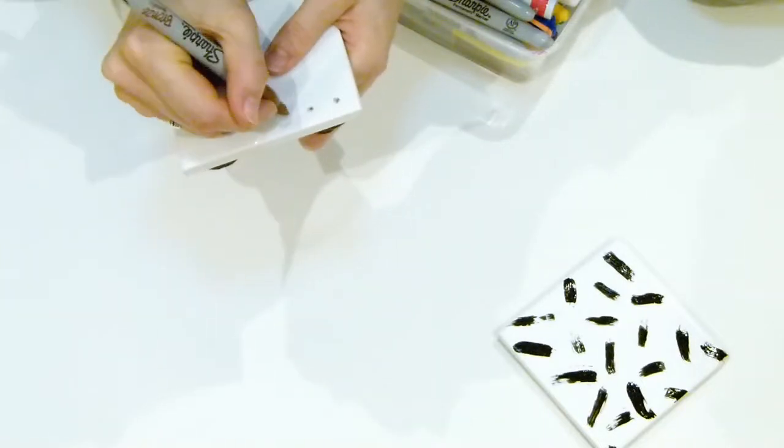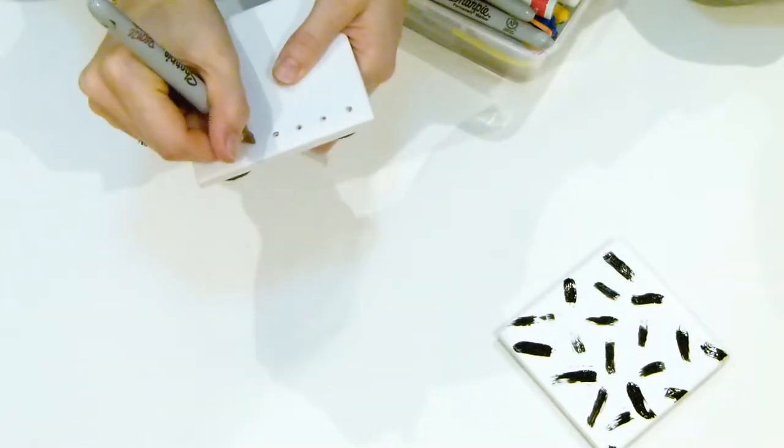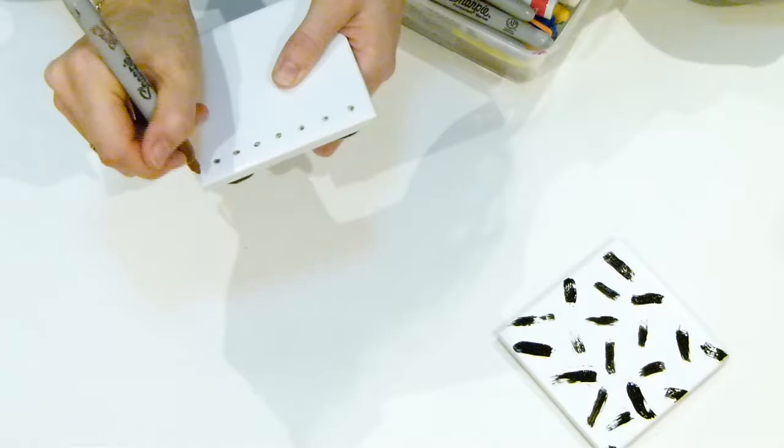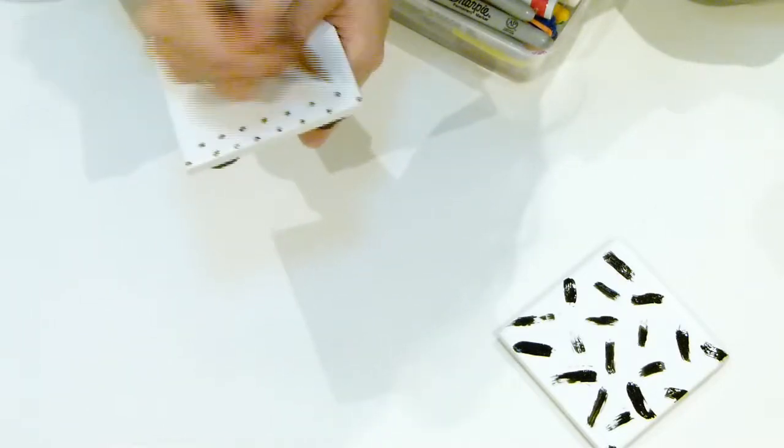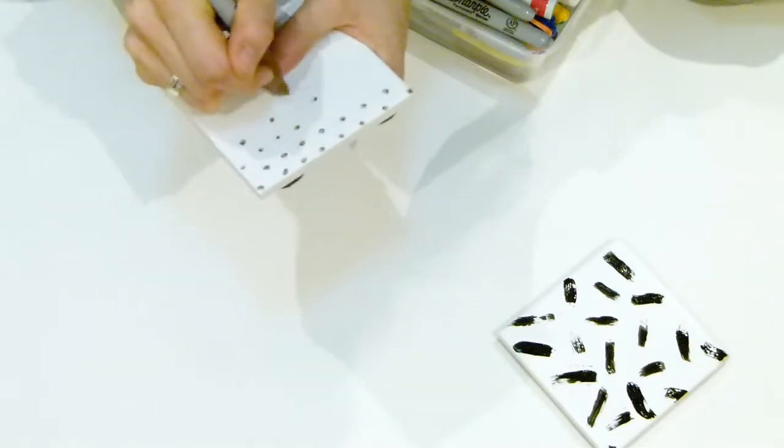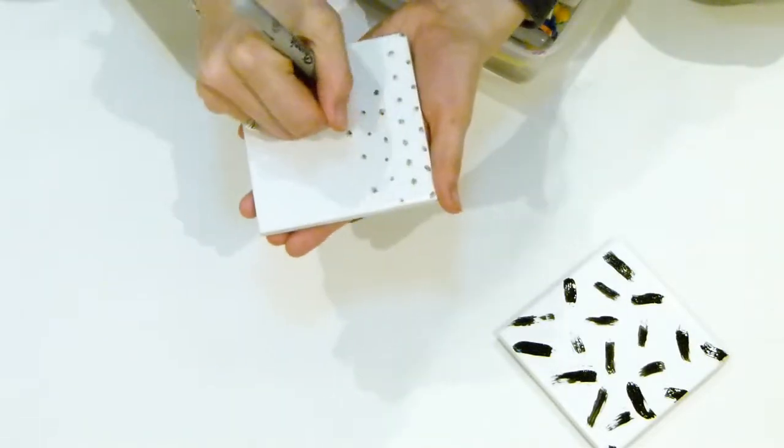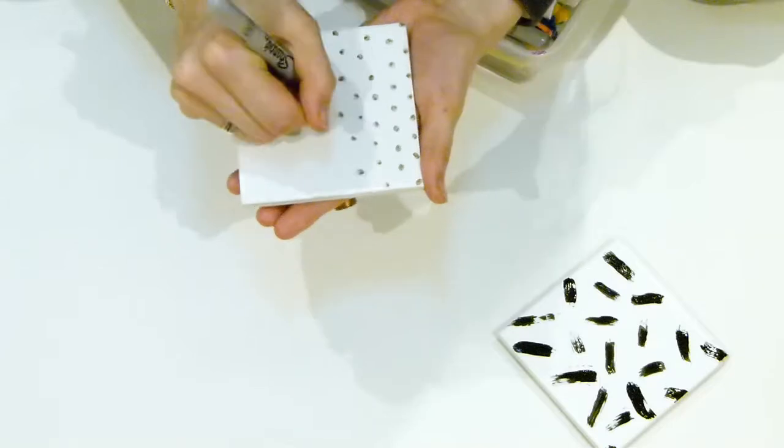Remember to seal your designs in with a coat of clear lacquer or clear spray paint. To make them more furniture friendly, I added some furniture protector pads on the bottom that you can get really cheaply and inexpensively from pound stores and things like that.